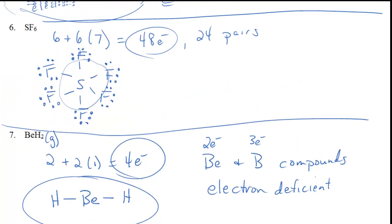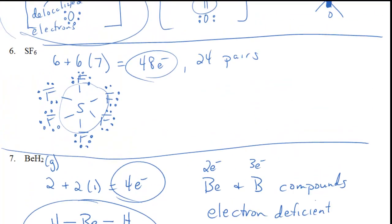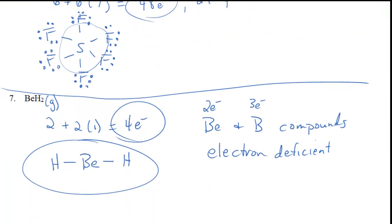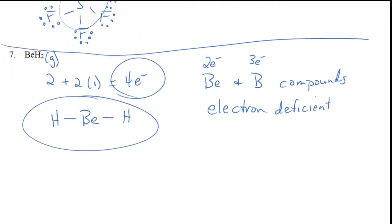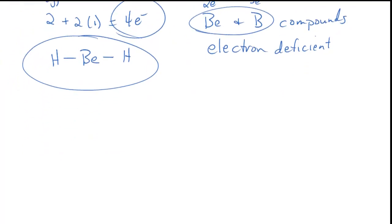Sometimes we end up with more than eight electrons, and on rare occasions we end up with less than eight. Beryllium and boron are where we might see electron deficiency.